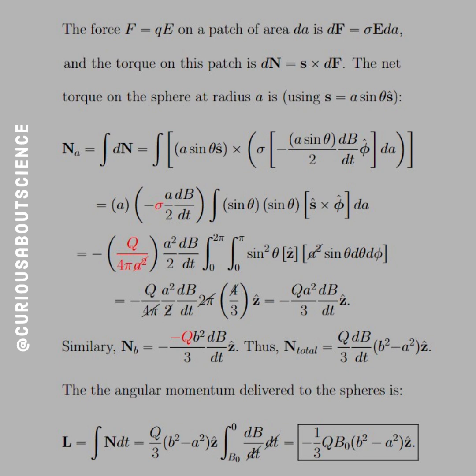And if we apply a similar task here, we get that N_B is equal to the same thing, except we have a negative Q on it. So, we have a double negative, which cancels. And so, if we add those two things together, what we actually see is that we get Q over 3, dB/dt, B cubed, or B squared minus B A squared in the z hat direction. So, the total angular momentum delivered to the sphere is...